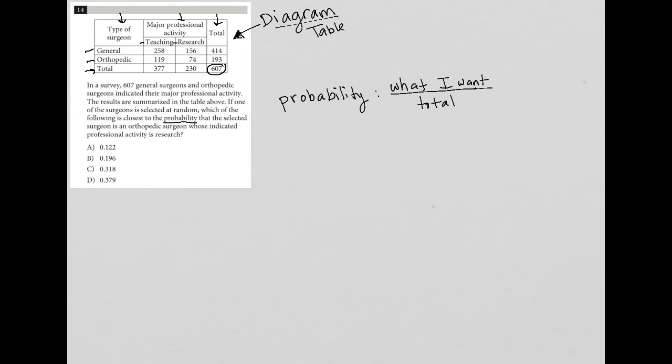So let's see, what is it that we want in this case? Which of the following is closest to the probability that the selected surgeon is an orthopedic surgeon whose indicated professional activity is research? Okay.